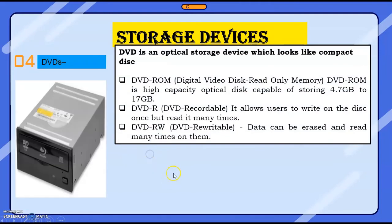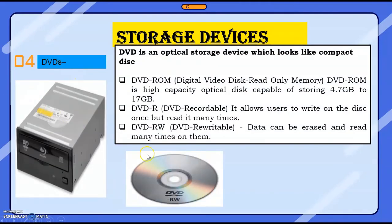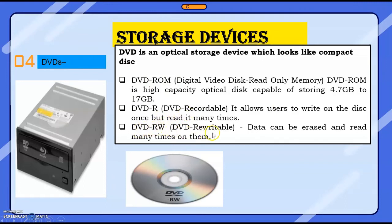Next we are going to learn DVD. DVD looks like a CD — yes, it looks similar. DVD is also an optical storage device because here also optical technology is used. DVD stands for Digital Video Disc. There are also three types of DVDs: DVD-ROM means Digital Video Disc Read Only Memory. It is a very high capacity optical disc compared to CDs. A CD has 700 MB, whereas a DVD can store from 4.7 GB up to 17 GB of data. DVD-ROM means read only; DVD-R means recordable but only one time; DVD-RW means rewritable.